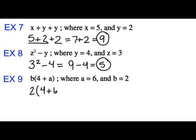z squared minus y. z is 3, so 3 squared minus 4. Well 3 squared is 3 times 3 which is 9. Minus 4 which is 5.